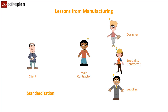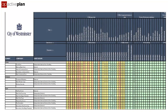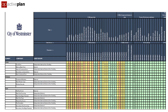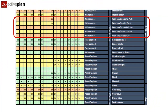Manufacturers use standard components and assemblies and we can standardize asset data. The client provides the supply chain with an explicit set of requirements which can be automatically tested for compliance. Some of the more advanced clients are already on this journey. Here we have an AIR from a client — really good work. But if you're only providing flooring, seeing all the requirements of all the other disciplines is overwhelming.